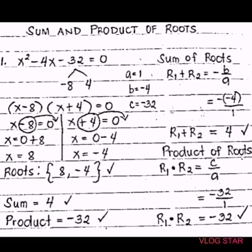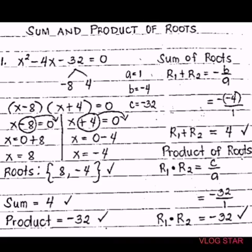You can also get the product and the sum of roots by adding or multiplying the roots directly. For example, if you add 8 and negative 4, you get 4 — because 8 plus negative 4 is positive 4. That is the sum. Or you can write the formula and substitute. For the product, multiply 8 and negative 4, which gives negative 32. So if you have the roots, you can just add to get the sum or multiply to get the product.